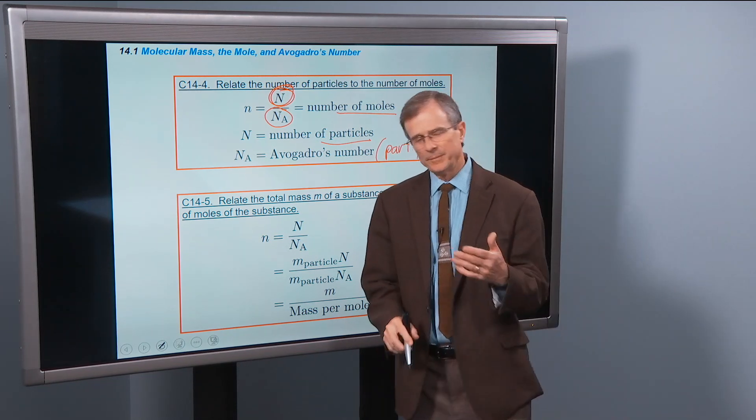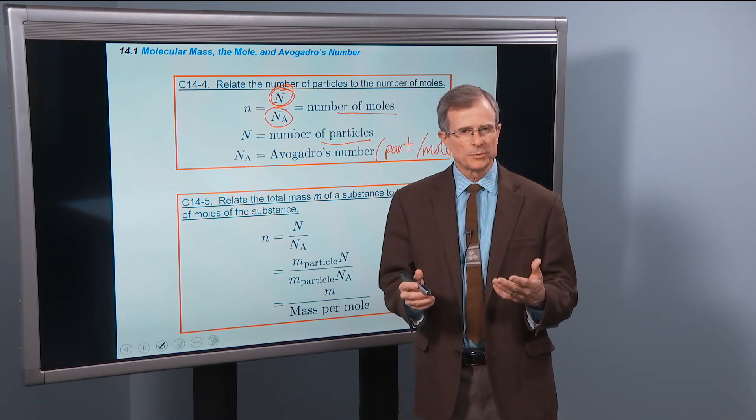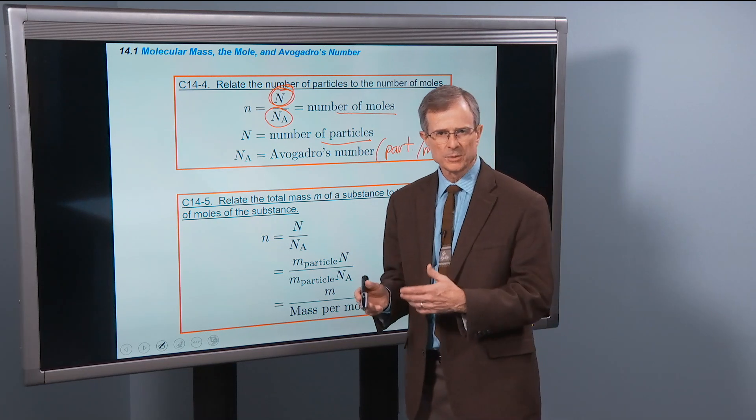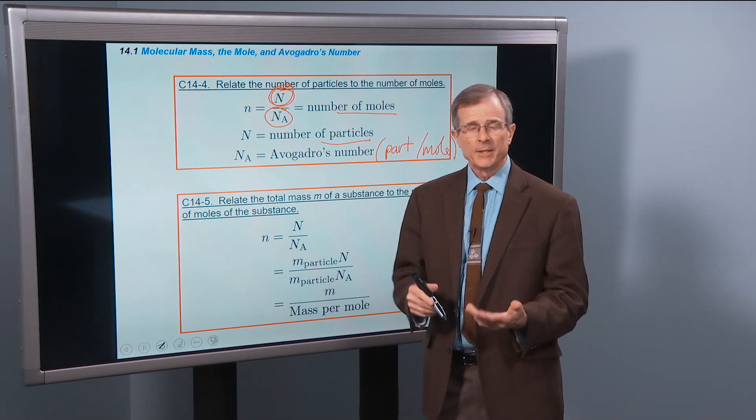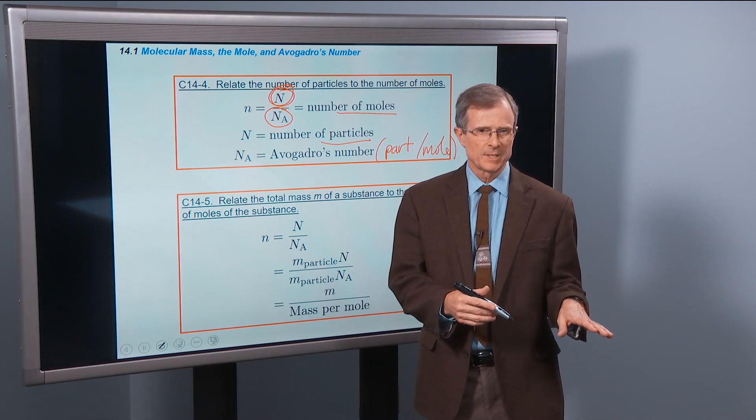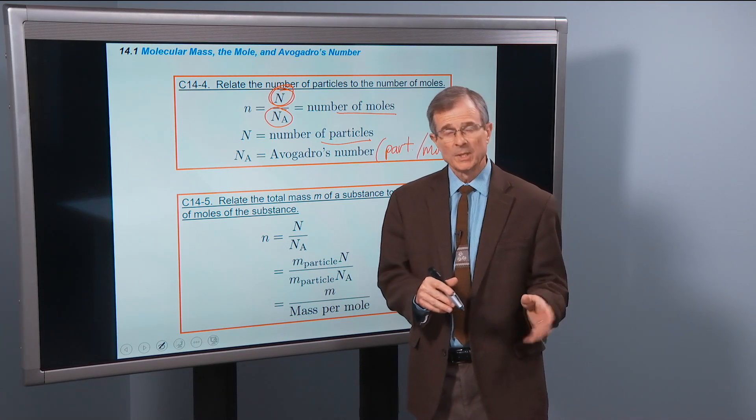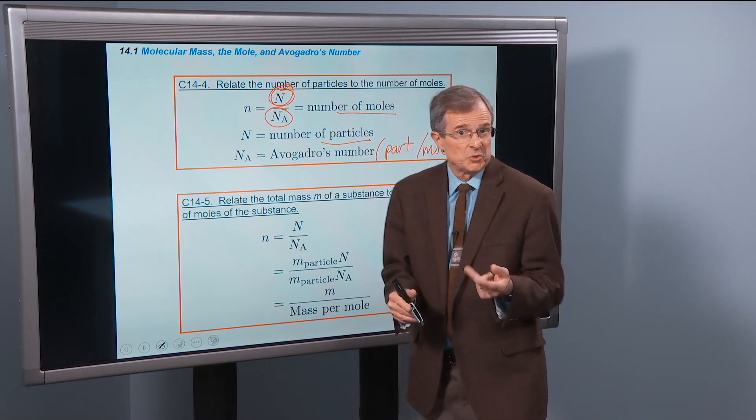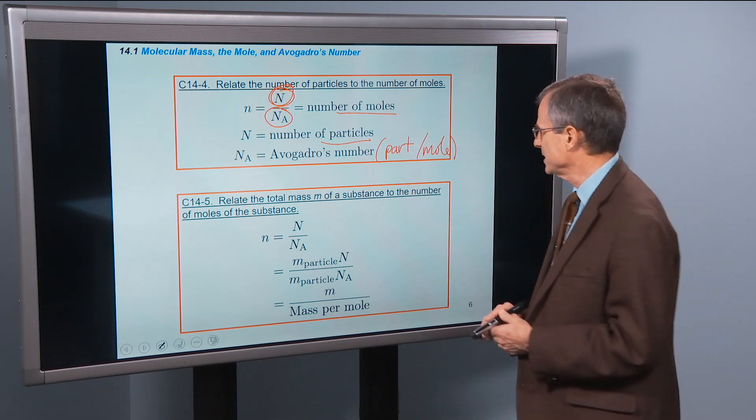You have 1 over 1 over moles, which gives you the number of moles. If instead of having 6.022 times 10 to the 23rd particles, you have twice that, and you divide by 6.022 times 10 to the 23rd, then you end up with 2 moles. Nothing very fancy about that.